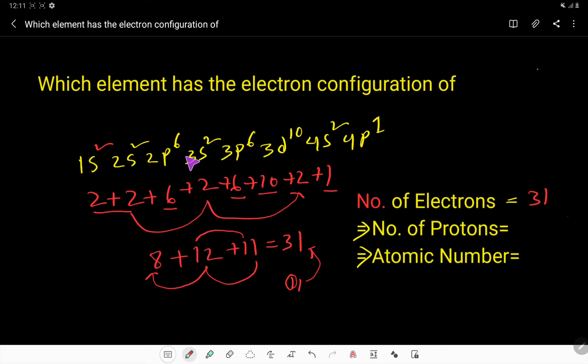We know that this is a neutral element because there is no mention about the charge of this element. So in a neutral element, the number of electrons is equal to number of protons. So here the number of protons will be 31. The charge of proton is positive, the charge of electrons is negative.